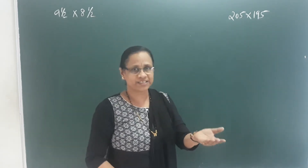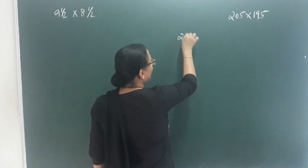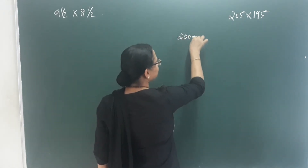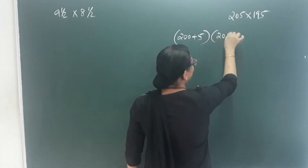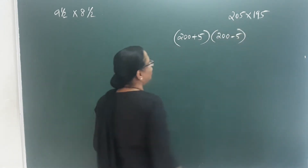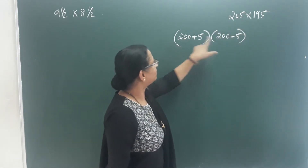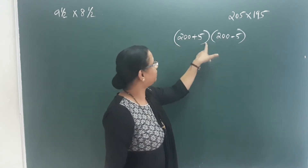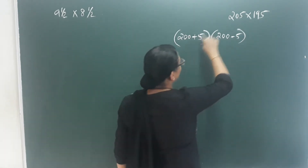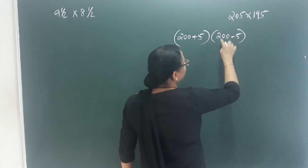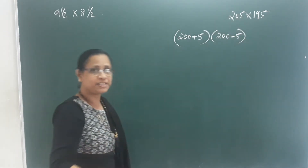We are going to study two examples. How do we do this? Take 200 plus 5 into 200 minus 5. We are going to identify a and b. Here a is 200 plus 5 and b is 200 minus 5, which is 195.